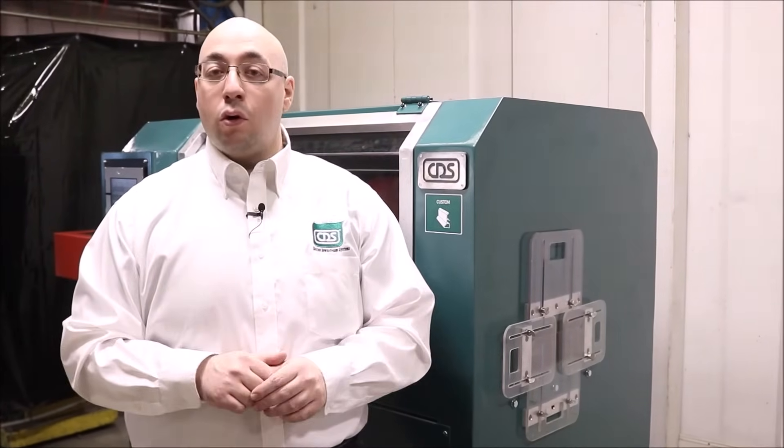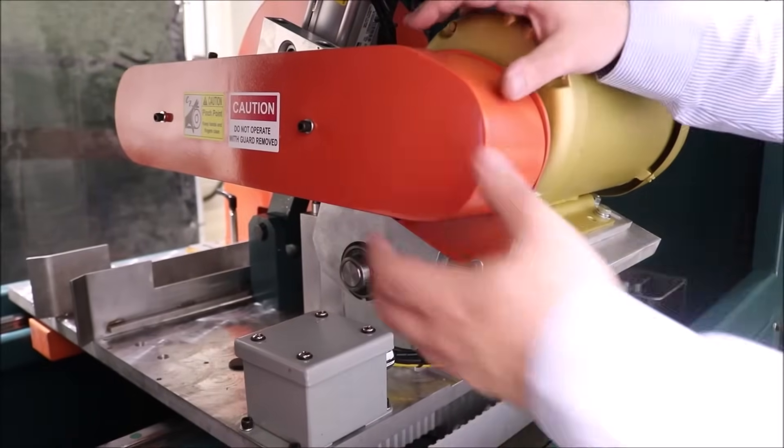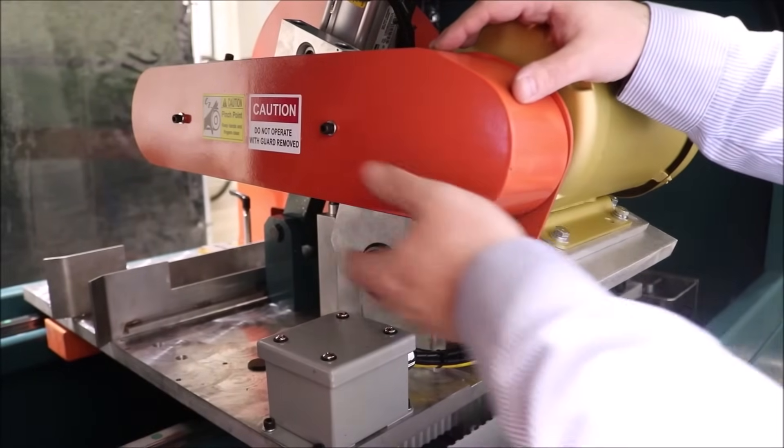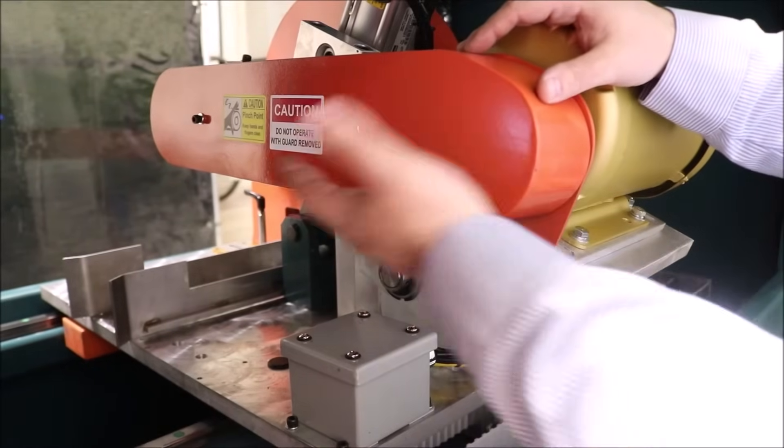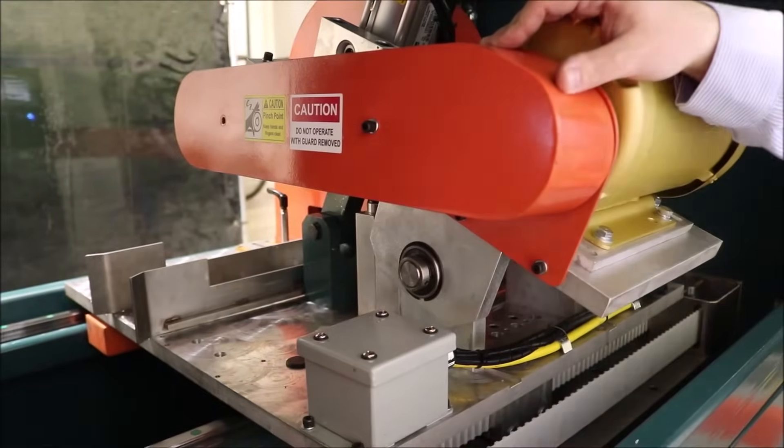We will be going over the maintenance section of the machine. To have access to the belt of the saw blade, we will need to remove this guard. There are two screws to undo. So we'll take them out.